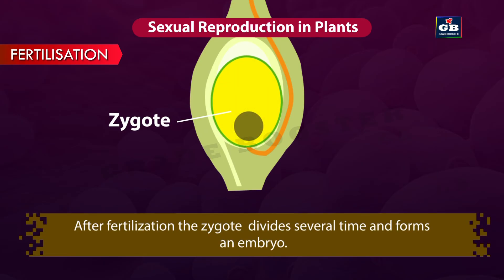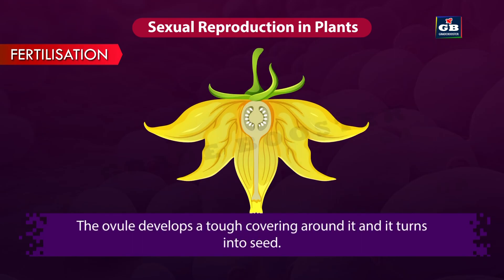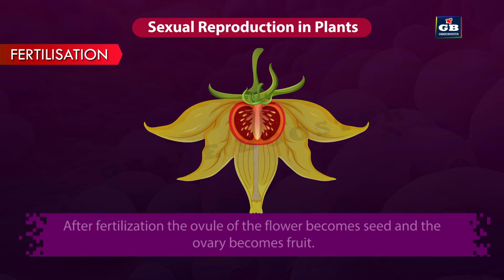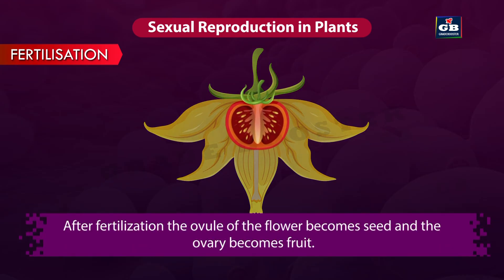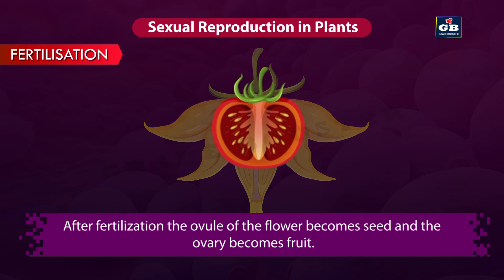After fertilization, the zygote divides several times and forms an embryo. The ovule develops a tough covering around it and turns into a seed. The ovary grows in size and gets ripened to become a fruit. That means after fertilization, the ovule of the flower becomes the seed and the ovary becomes the fruit.